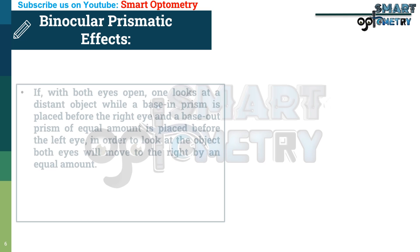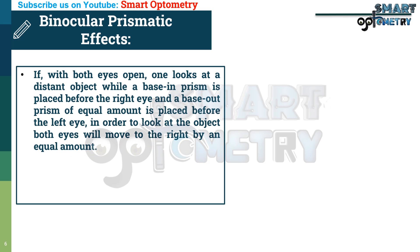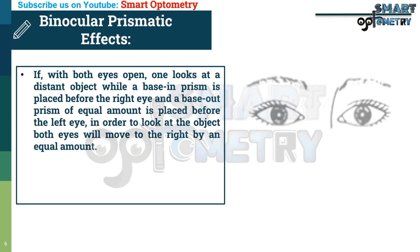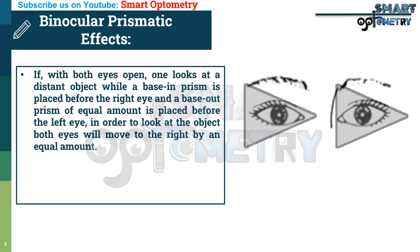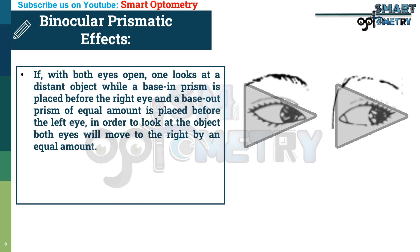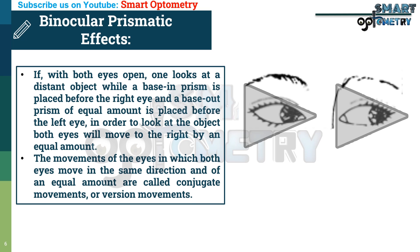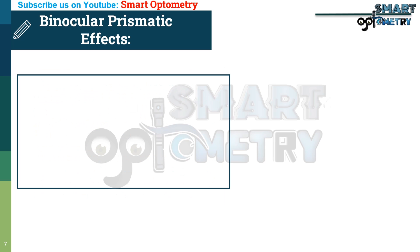For binocular prismatic effects: if with both eyes open one looks at a distant object while a base-in prism is placed before the right eye and a base-out prism of equal amount is placed before the left eye, in order to look at the object both eyes will move to the right by an equal amount. The movements of the eyes in which both eyes move in the same direction and by an equal amount are called conjugate movements or version movements.